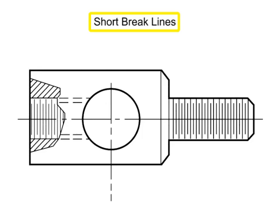Short brakes are indicated by solid freehand lines, and are typically used to illustrate smaller section views, where removing material from the part illustrates features otherwise not shown.